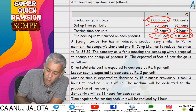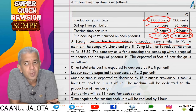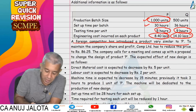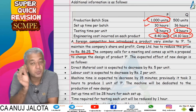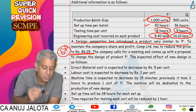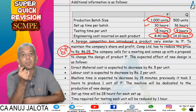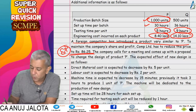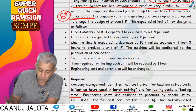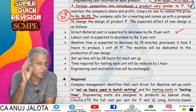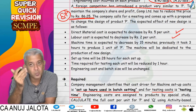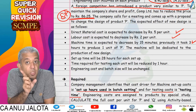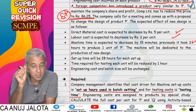A foreign competitor had introduced a product very similar to P. To remain competitive, the price had to be reduced to 86.25. However, the current cost had come to 87, so reducing the price to 86.25 would result in a loss. Therefore, a cost reduction plan was considered. Six changes were proposed: reduce material cost by 5, reduce labor cost by 2, and reduce machine time — though machine cost would not change since it was fixed.